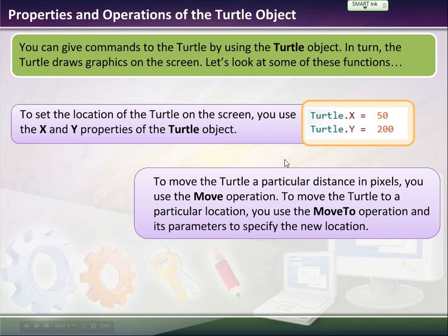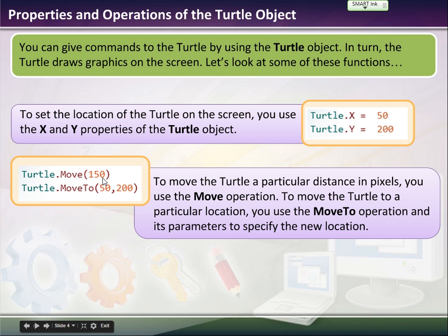And then to move the turtle a particular distance in pixels, you would use the move operation, or you can move to a specific location on the screen by using the move to operation. So, the turtle is always going to have his head facing a certain way. If I just type in move 150, it moves whatever direction the turtle is facing, 150 pixels. If I put move to 50, 200, that's like x, y, it would move to 50, 200.